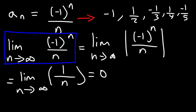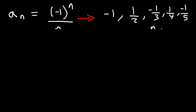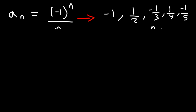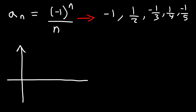So this sequence converges. Let's graph a_n. The first term is at -1, the second at +1/2, then -1/3, then 1/4, then -1/5, then 1/6, and so forth.